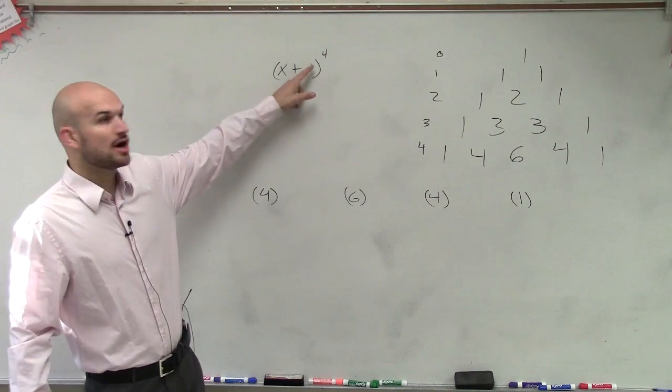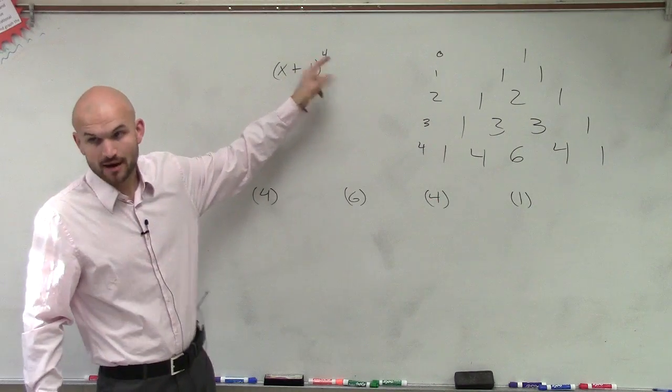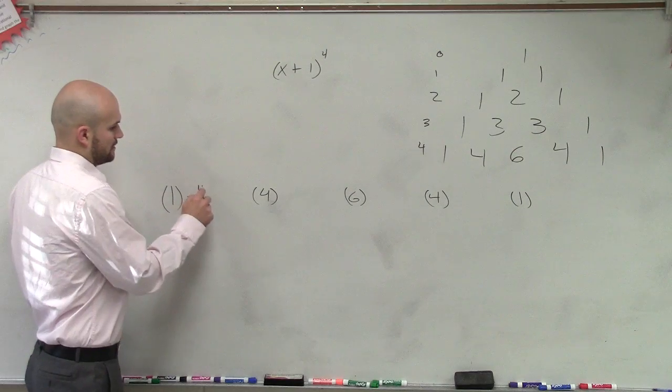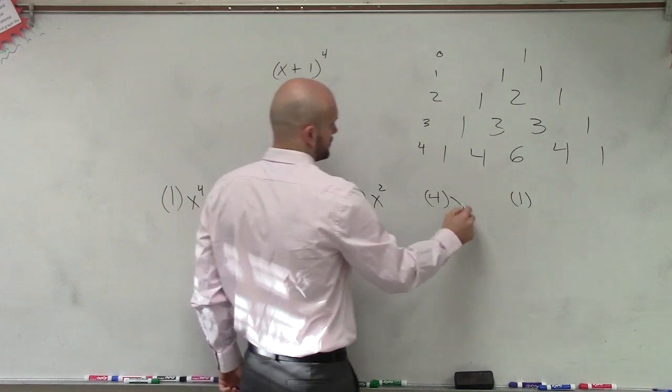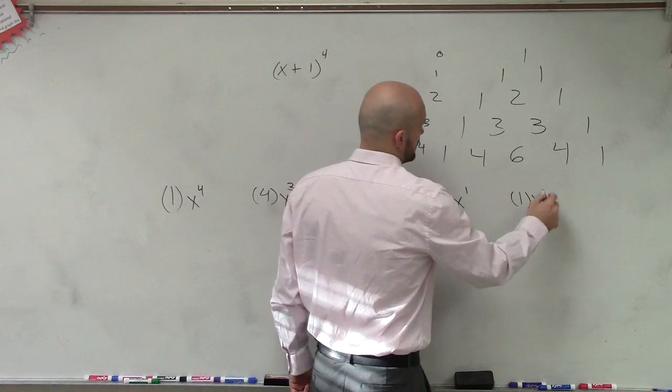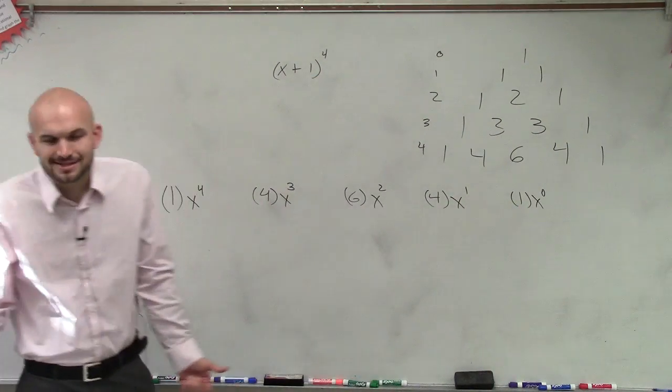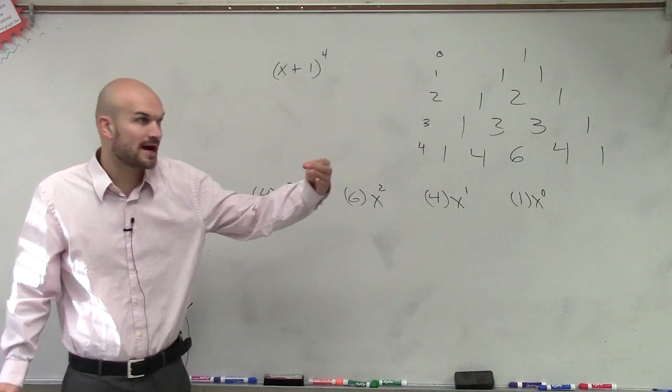Then remember, we always start with x to the fourth power, right, and then we decline. x cubed, x squared, x to the first, and x to the 0. We'll write an x to the 0 just so you guys can remember that it goes all the way down.